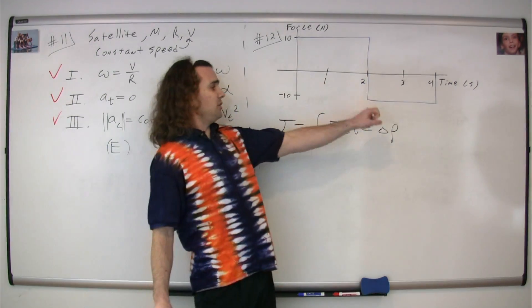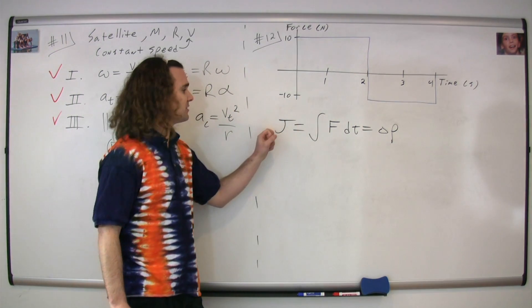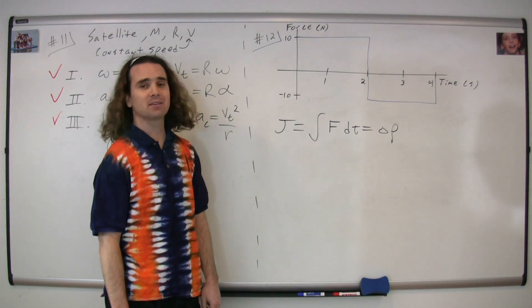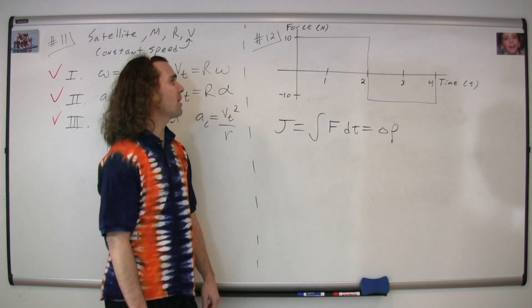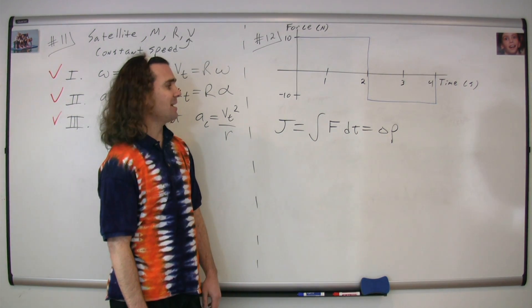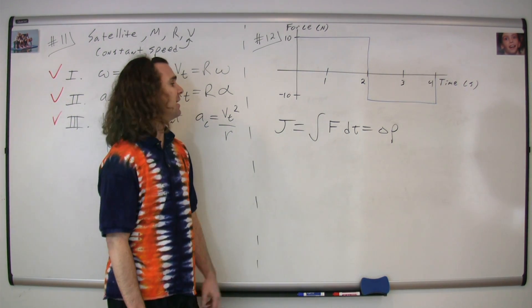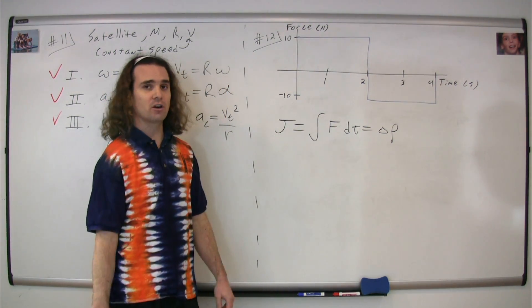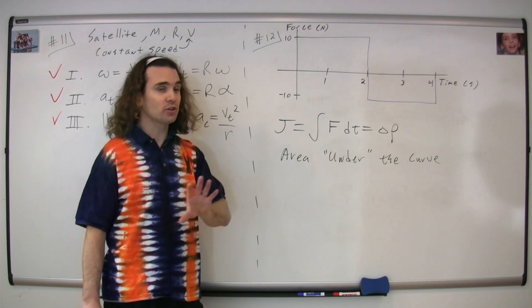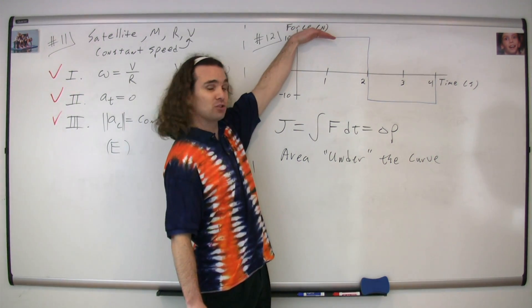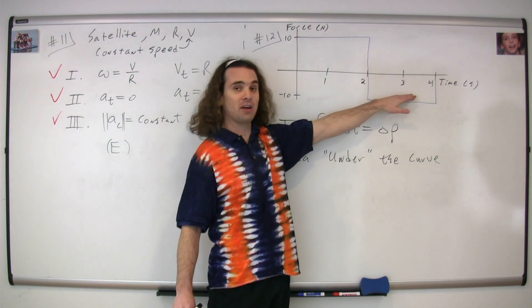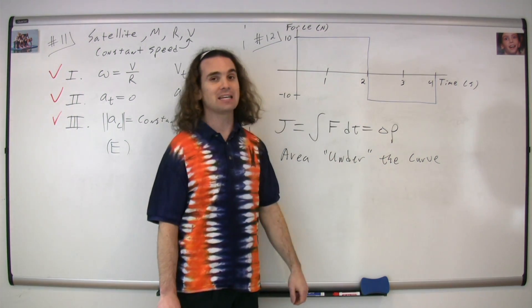The change in momentum is the same thing as the impulse, and the equation is the integral of force with respect to time. This is a classic problem where they're simply asking you to identify that the integral is the area under the curve—meaning the area between the curve and the horizontal line, where any area below the curve is actually negative.